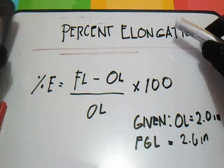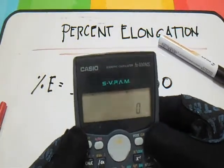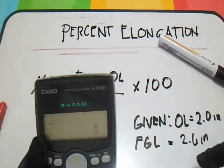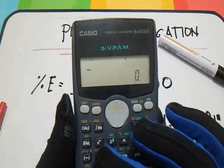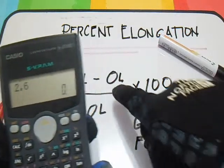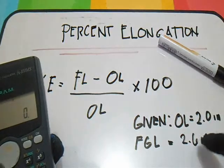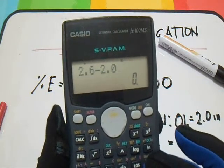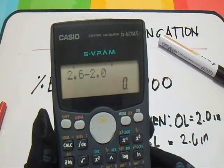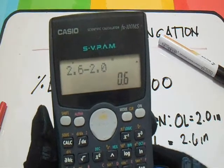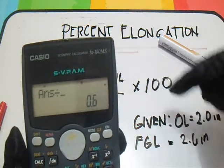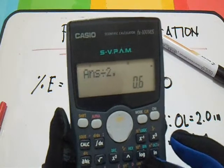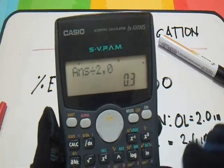Let's compute this using the calculator. Our final length is 2.6, minus our original length of 2.0. That gives us 0.6 over the original length of 2.0, and then we multiply it by 100.